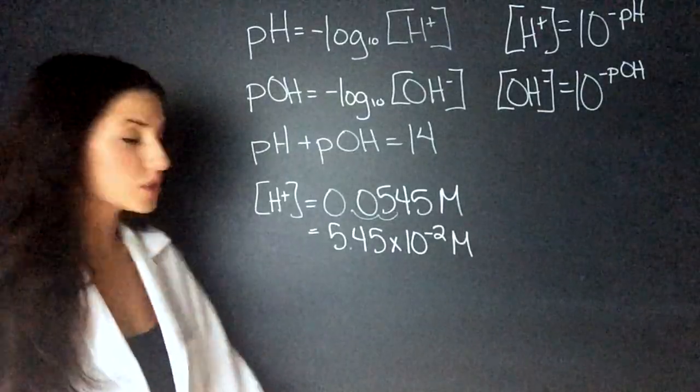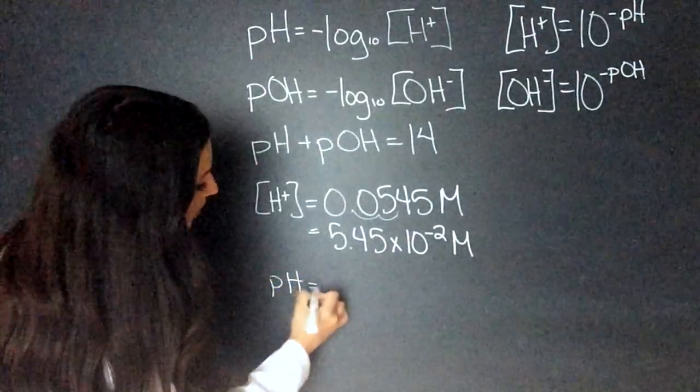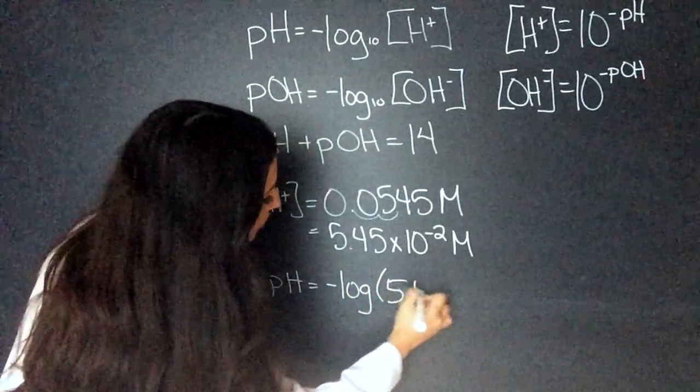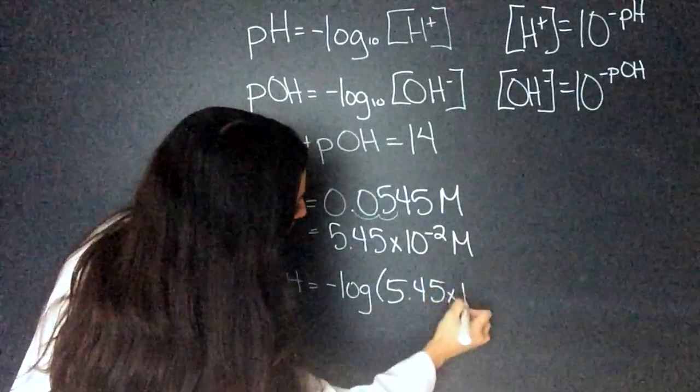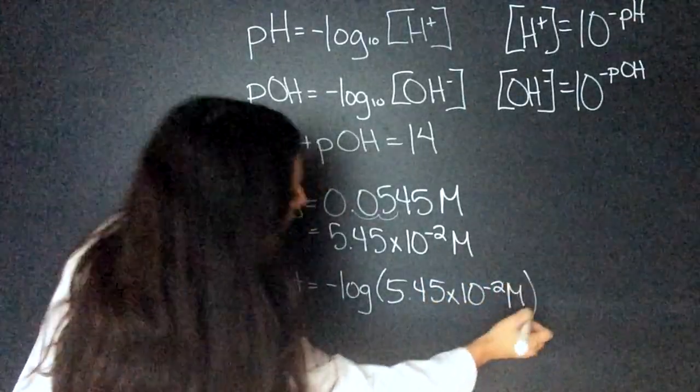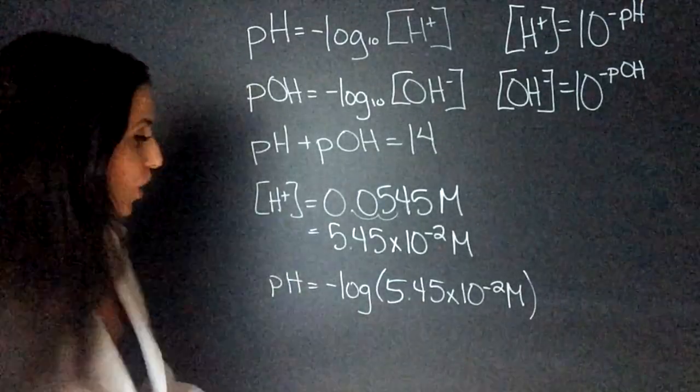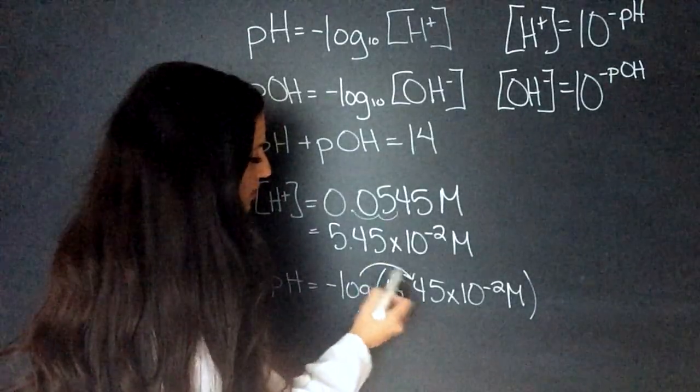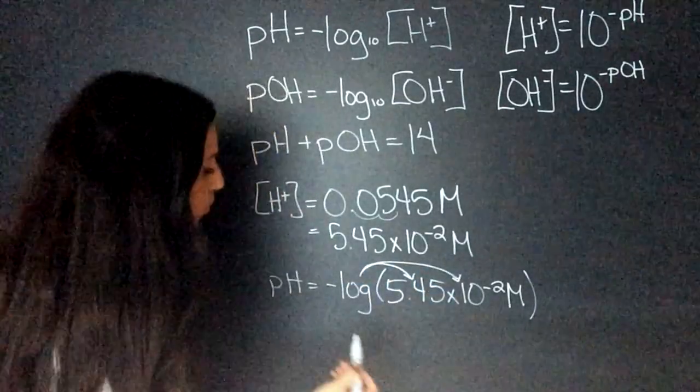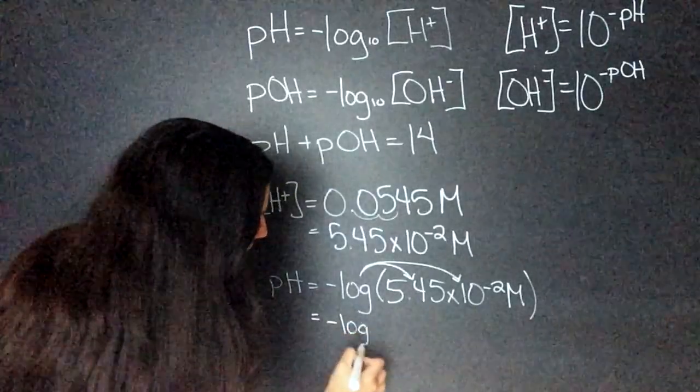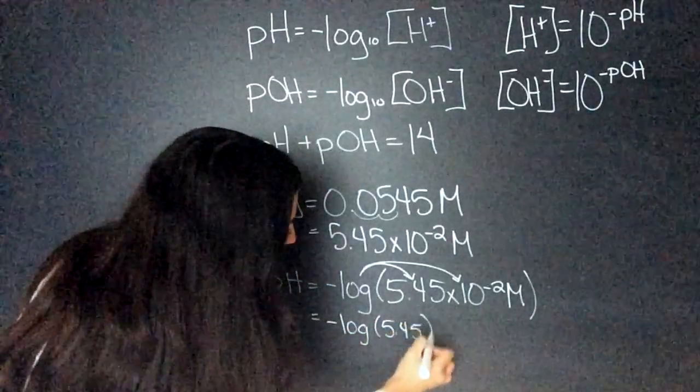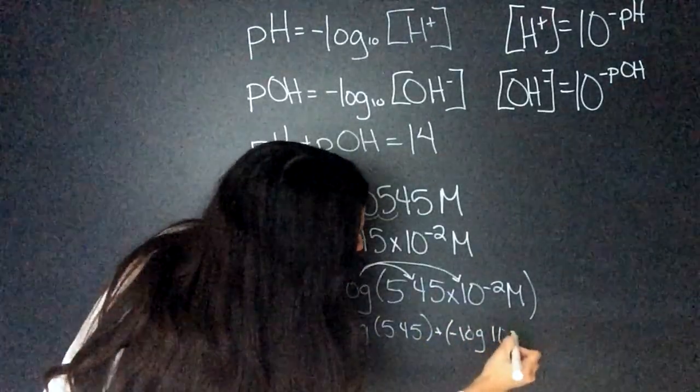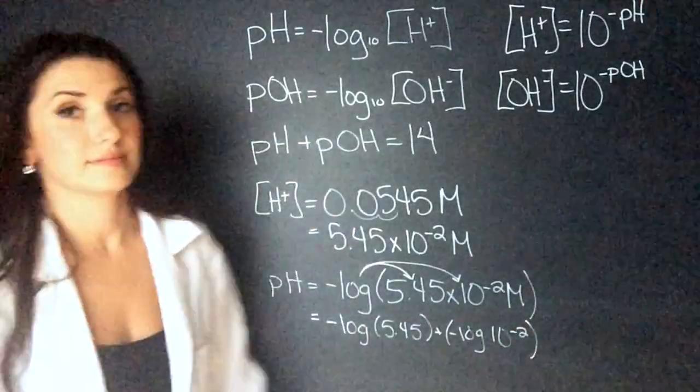So, now when we go to do pH, we have pH is going to equal the negative log of 5.45 times 10 to the negative 2. Now, we can't just plug this in. Remember back to grade 11 math where you have to disperse the log onto both of them. So, we're going to have the negative log of 5.45 plus the negative log of 10 to the negative 2.